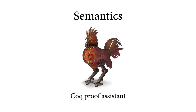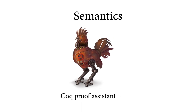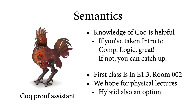Throughout the course we'll explore the material not only with paper and pencil proofs, but also using the Coq proof assistant to formalize and in many cases help you write shorter and simpler proofs. It would be very helpful if you've already taken Gerrit Smolke's Introduction to Computational Logic course, but if you haven't you can still take semantics — you just need to do a little more work in the beginning to learn Coq.